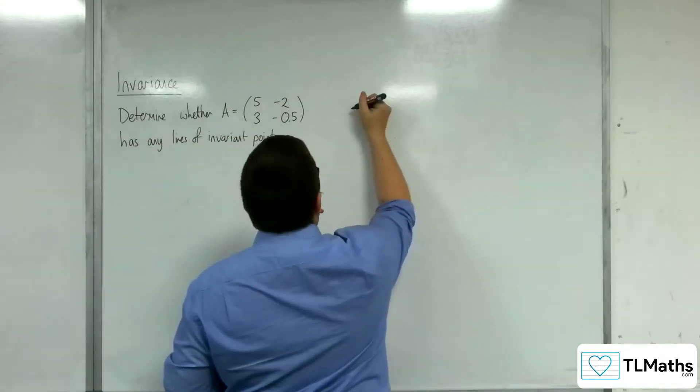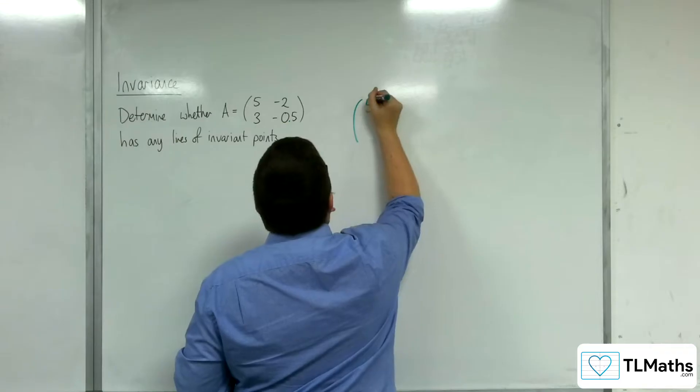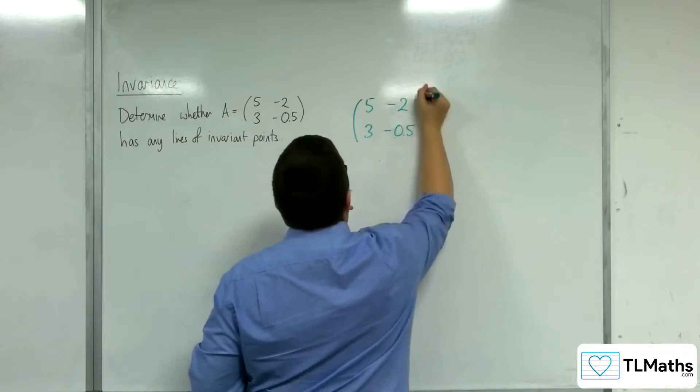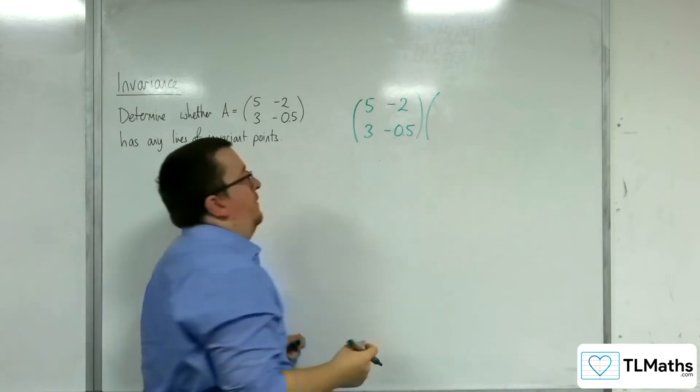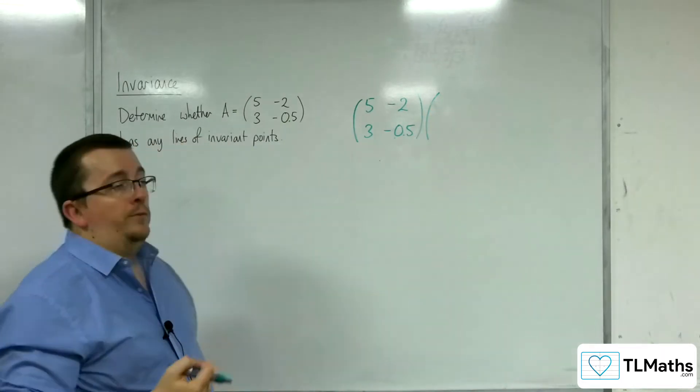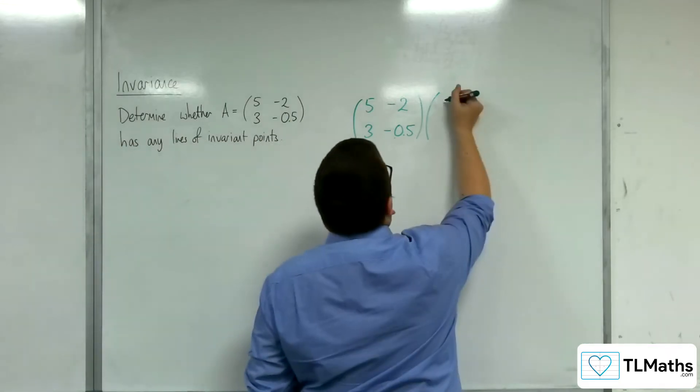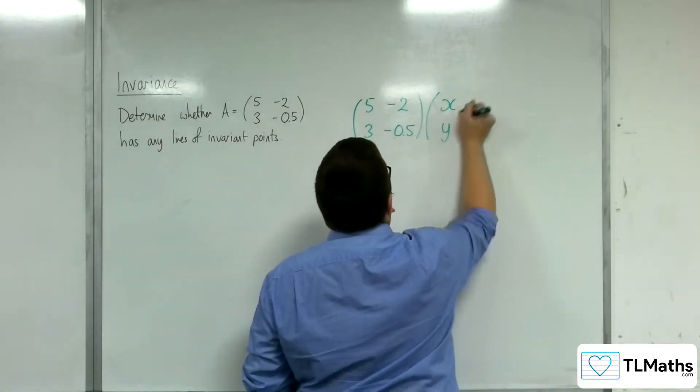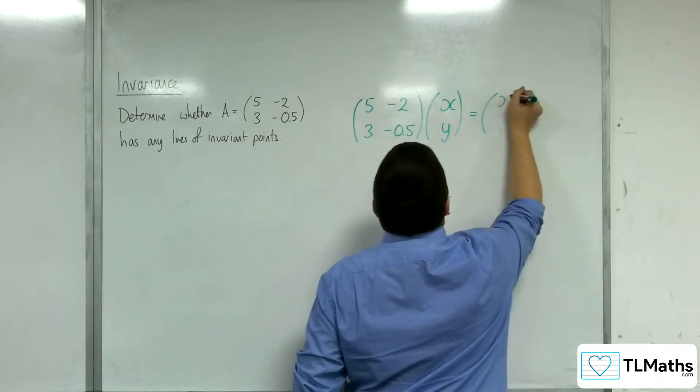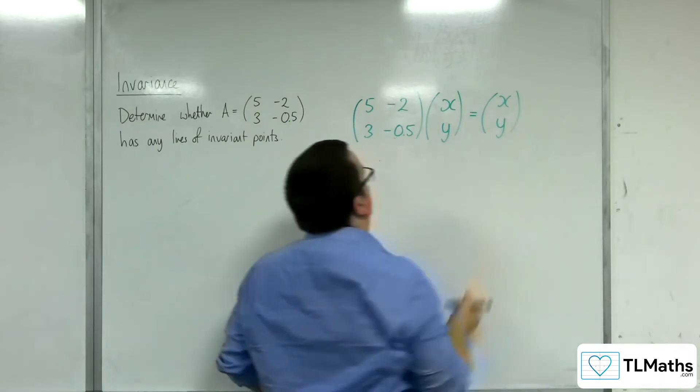We're going to use the same idea. So, 5 minus 2, 3 minus 0.5. Now, in order to find whether there are any lines of invariant points, if I apply that to x, y, what I'm looking to get is x, y out of this.